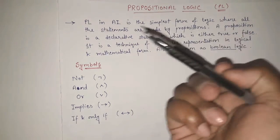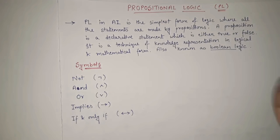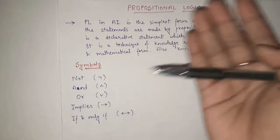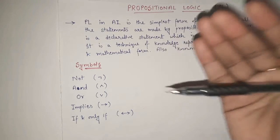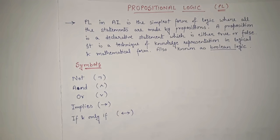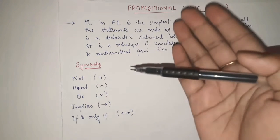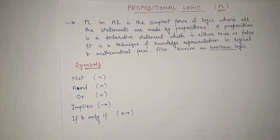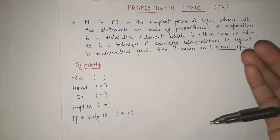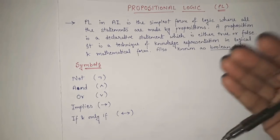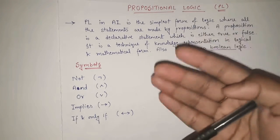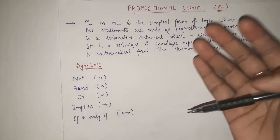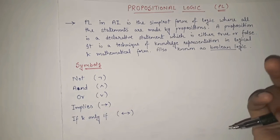In today's video we are going to see one important topic of artificial intelligence — that is propositional logic. It is actually a very general topic, but today we are going to see it in detail. Propositional logic is basically needed in AI for knowledge representation. Knowledge representation in AI can be done in various ways — not just propositional logic. There are various ways like logic representation, semantic networks, and frame networks. Today we are going to learn about logic representation. To represent knowledge logically in AI, there are mainly two ways: the first is PL, that is propositional logic, and the second is FOL, that is first order predicate logic. These are the two important ways currently used.